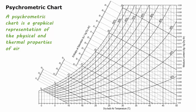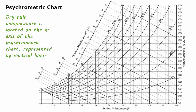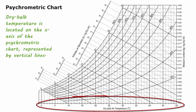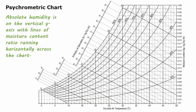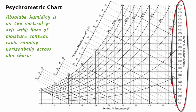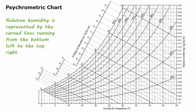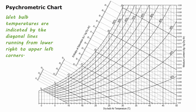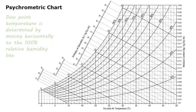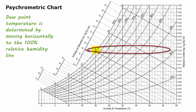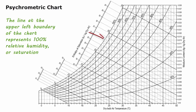A psychrometric chart is a graphical representation of the physical and thermal properties of air. Dry bulb temperature is located on the x-axis, represented by vertical lines. Absolute humidity is on the vertical y-axis with lines of moisture content ratio running horizontally. Relative humidity is represented by curved lines running from bottom left to top right. Wet bulb temperatures are indicated by diagonal lines running from lower right to upper left. Dew point temperature is determined by moving horizontally to the 100% relative humidity line, which forms the upper left boundary of the chart.